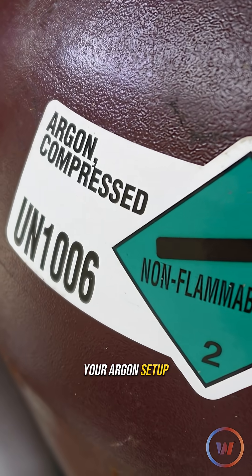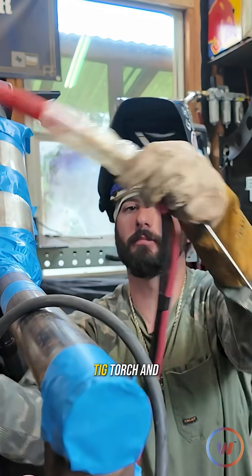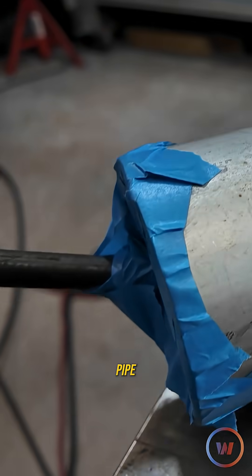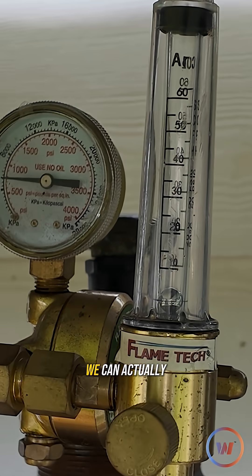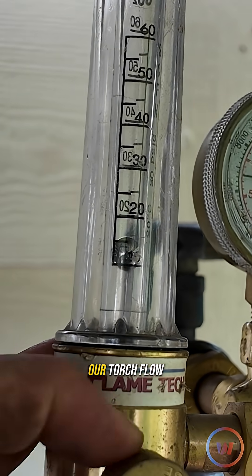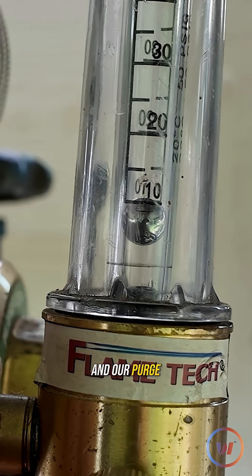As far as your argon setup, we're needing two hoses - one to the TIG torch and one to the inside of the pipe. For what I have, which is a dual flow regulator system, we can actually adjust and control our torch flow and our purge flow.